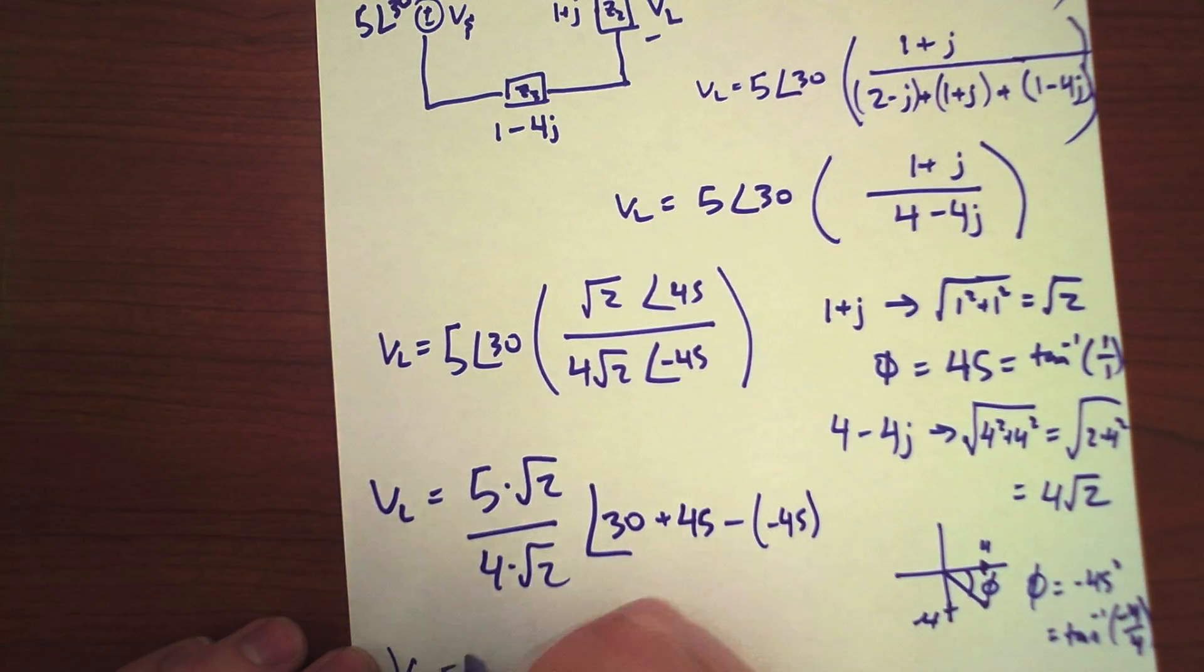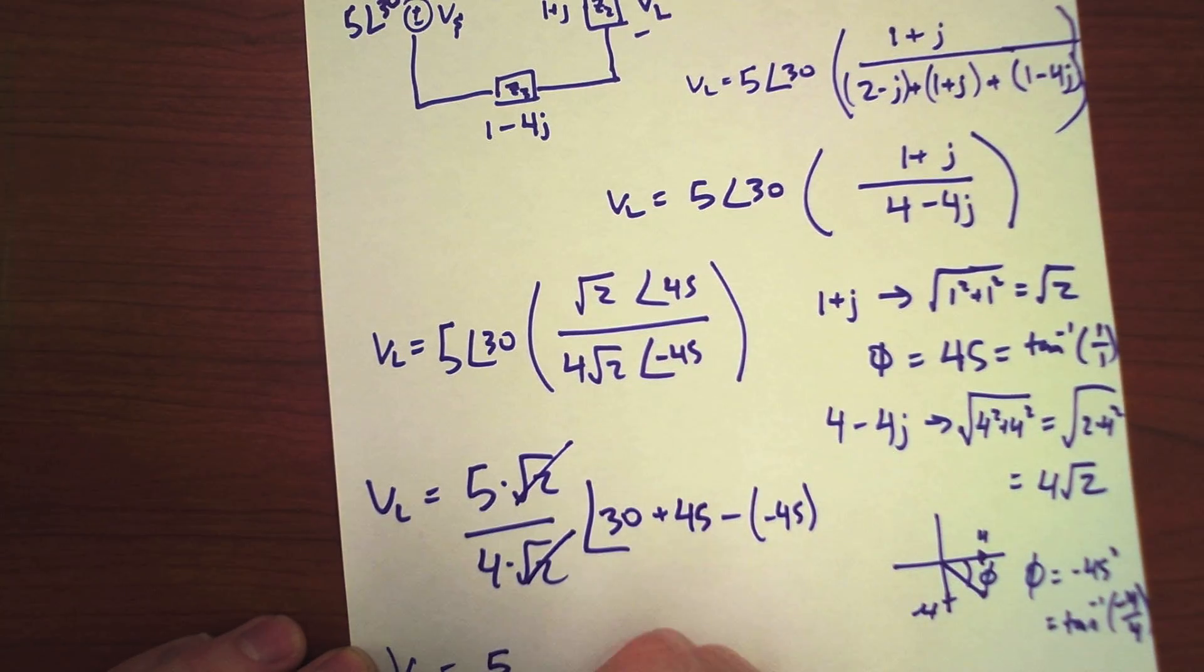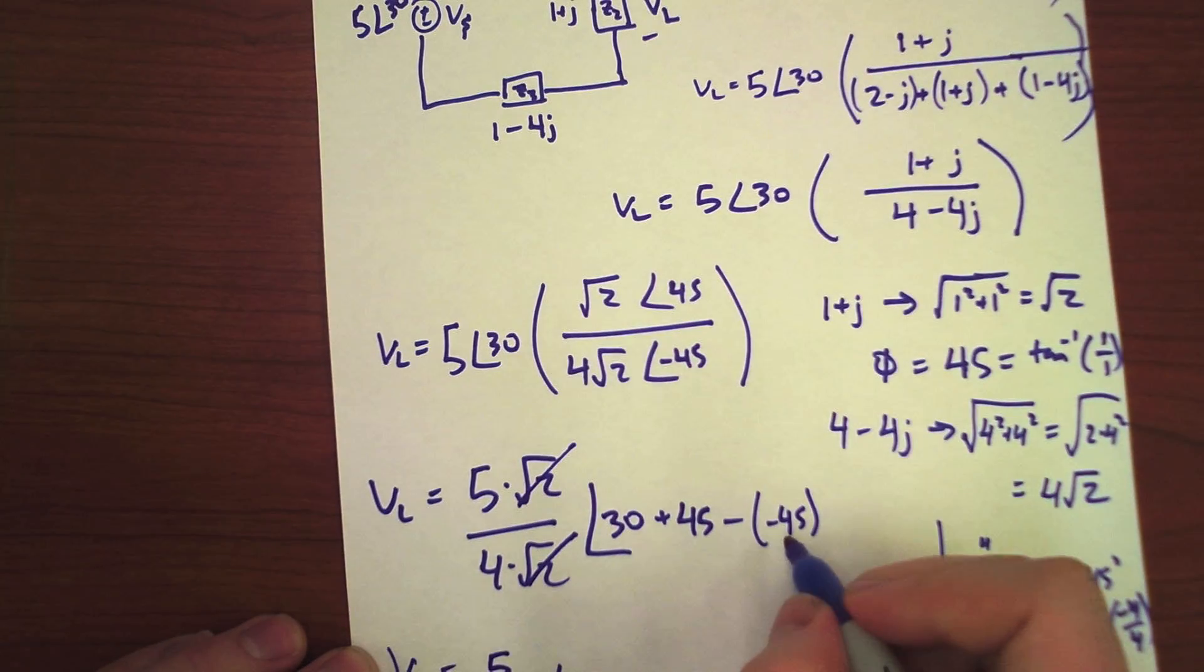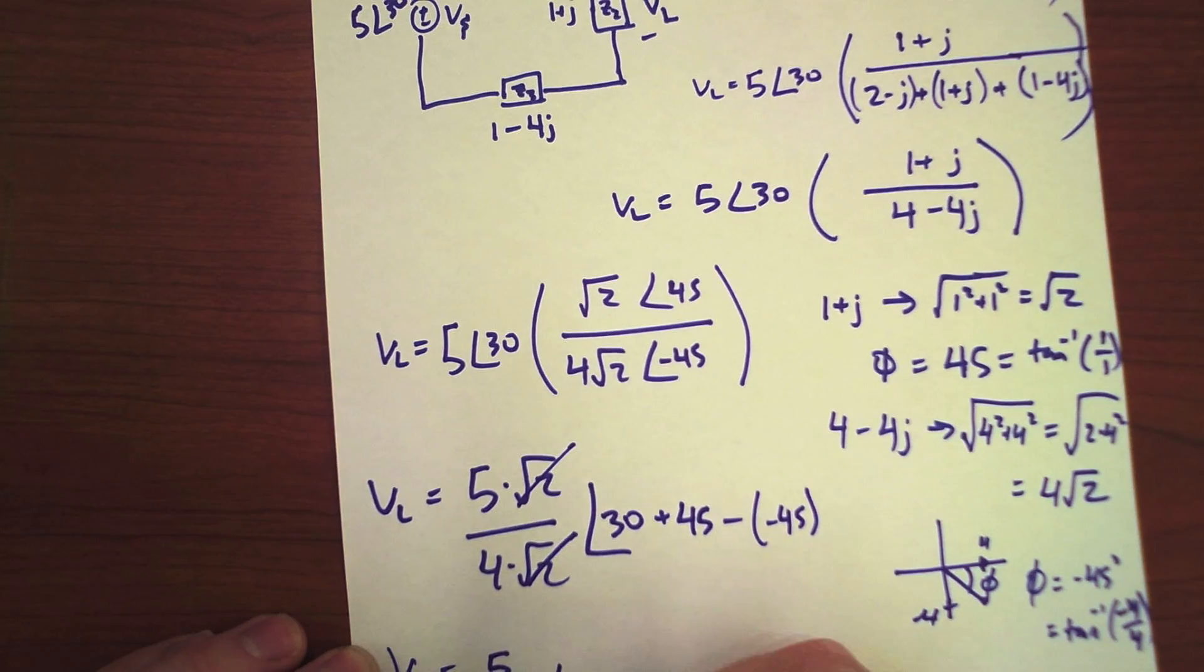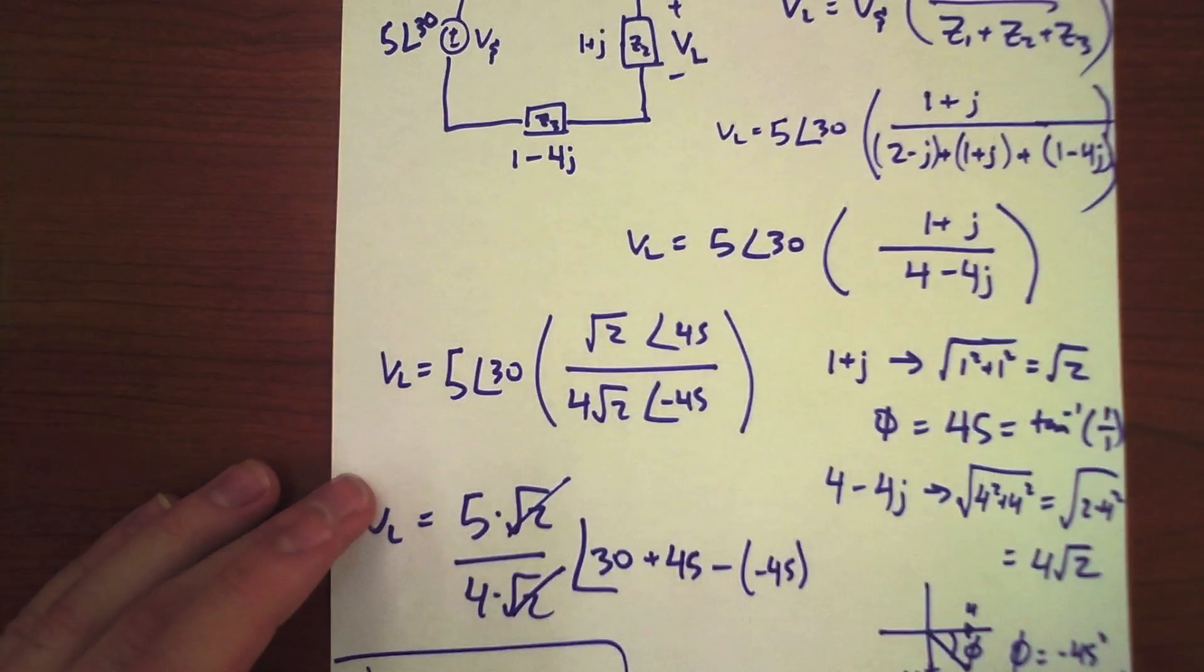VL is equal to, those cancel, 5 over 4 angle 90 plus 30 is 120 degrees. And that's going to be our final answer.